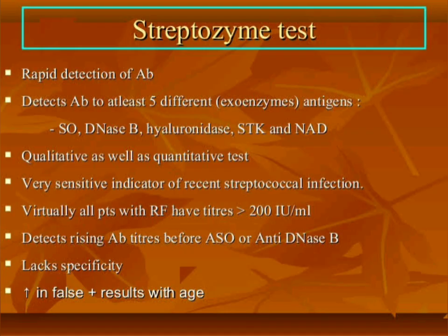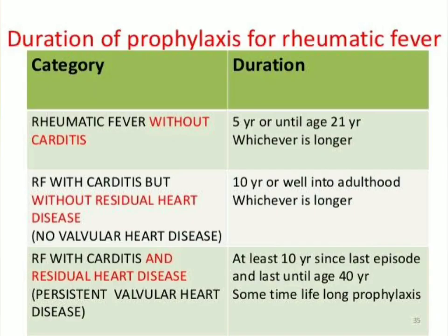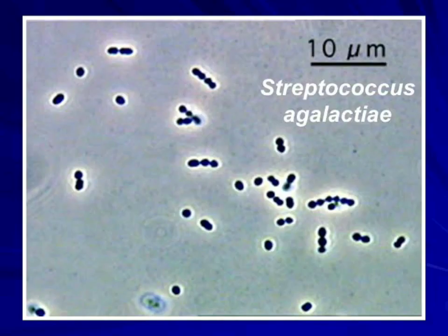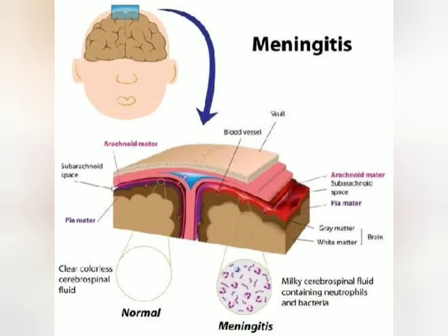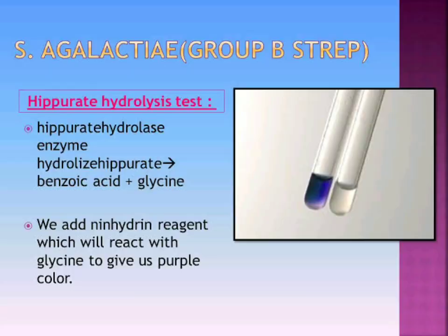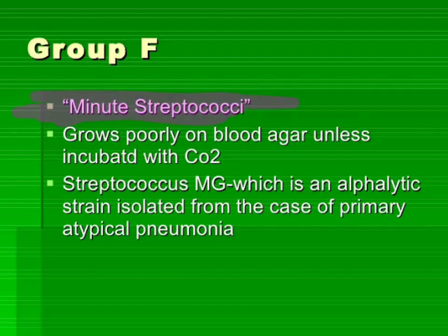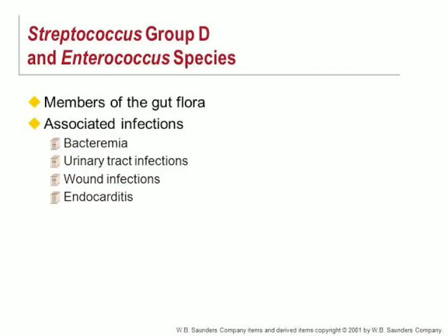The streptozyme test is a convenient, sensitive, and specific screening test. Prophylaxis is important in prevention of rheumatic fever. Group B Streptococcus, i.e., Streptococcus agalactiae, is the single most common cause of neonatal meningitis in the west. Their ability to hydrolyze hippurate acts as an important identification method. Group F streptococci are called minute streptococci. Enterococcus, or fecal streptococcus, belongs to Group D Streptococcus.